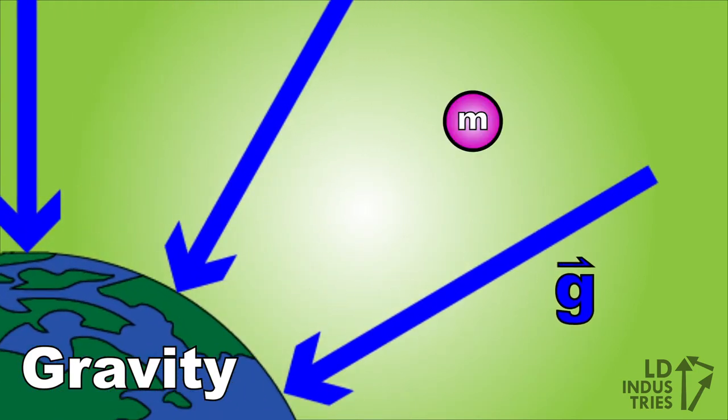When a particle with mass is in the field, it will experience a gravitational force in the same direction as the gravitational field. That's pretty easy. For gravity, the force and field are always in the same direction.